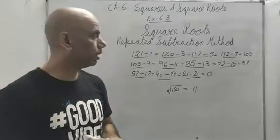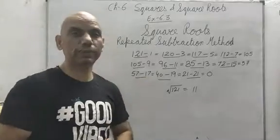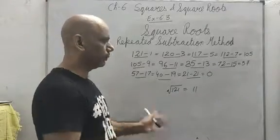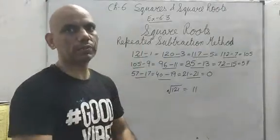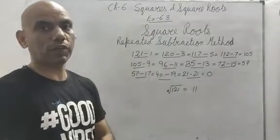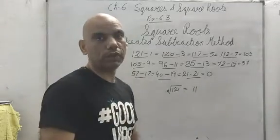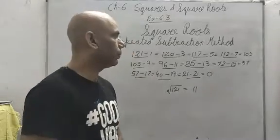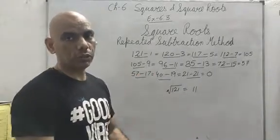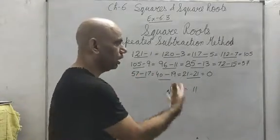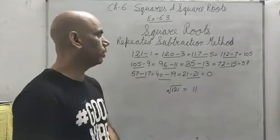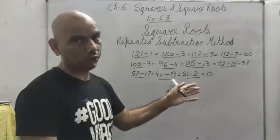But this is not very feasible — not a student-friendly method. If there is a big number, you will have to subtract so many times. If it is a square of 41, you subtract 41 times; if it is a square of 89, you subtract 89 times. So this method is not very popular — we will do it for just one question in your book.